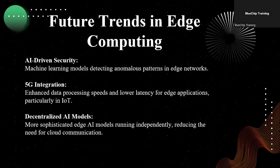Looking ahead, AI-driven security will play a large role, using machine learning to detect unusual patterns in edge networks and respond to potential threats. With the rise of 5G, edge computing will see even faster data processing and lower latency, particularly for IoT applications. We will also see more decentralized AI models running independently on edge devices, reducing the need for cloud communication and enabling smarter, more autonomous systems.